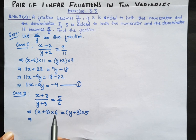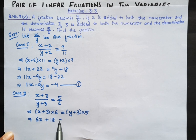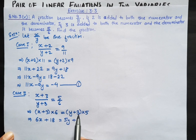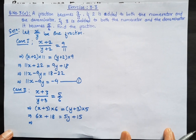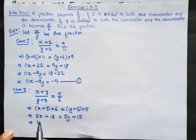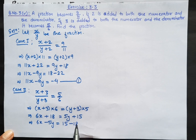Multiplying out: 6x plus 18 equals 5y plus 15. Rearranging variables to the left and constants to the right: 6x minus 5y equals 15 minus 18, which is minus 3. This is our equation number 2.